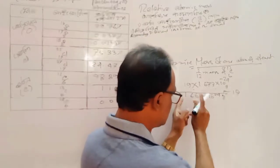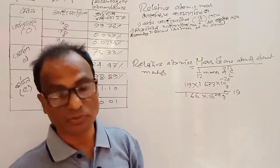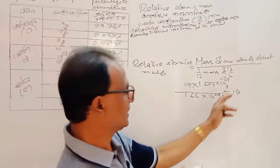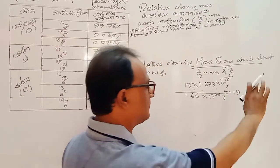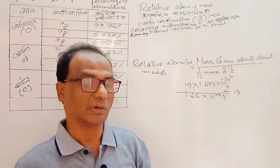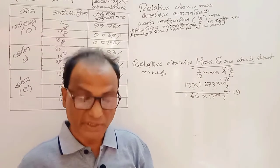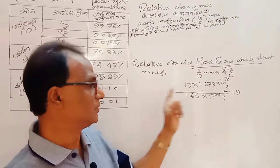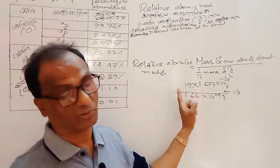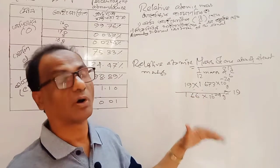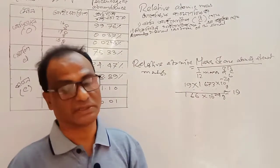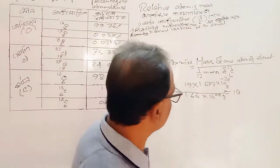This unit is called the Dalton. If we calculate this, we will have the same result. But for convenience and accuracy, we divide by Avogadro's number to get our accurate result.